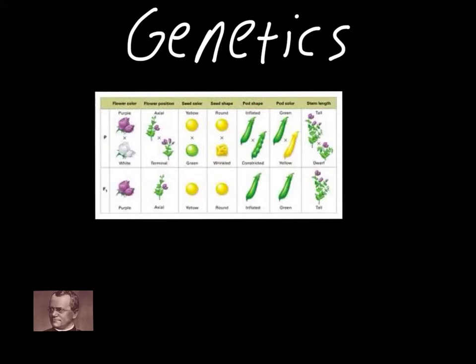Pod shape, which is either inflated or constricted. The inflated one is how you think of a normal pea. Constricted is kind of like snow peas, where you can see each little individual seed inside the pod. The pod color, which is either green or yellow.